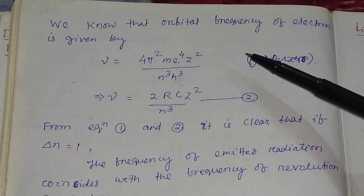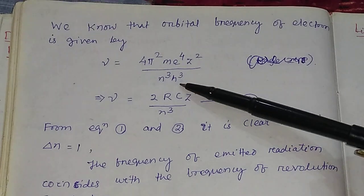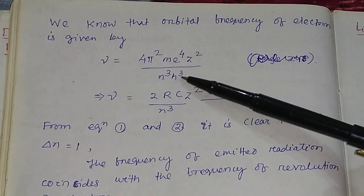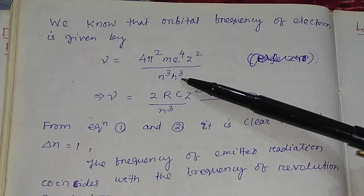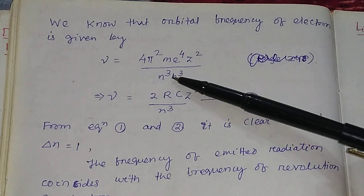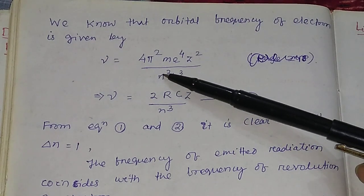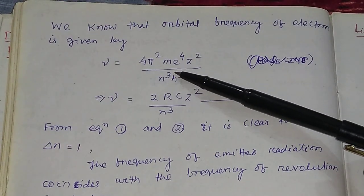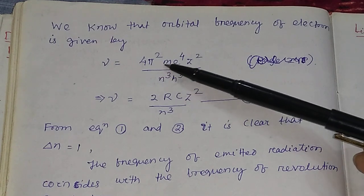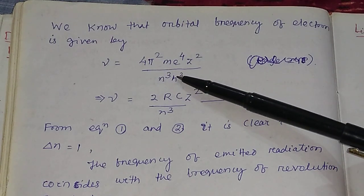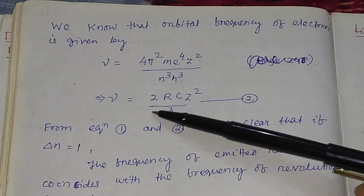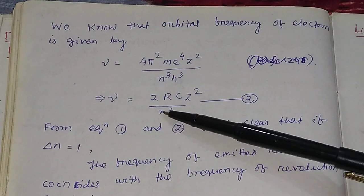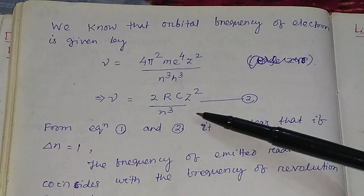The orbital frequency of the electron is given by ν = 4π²Me⁴Z² / (N³H³) in CGS units, where K = 1. In terms of the Rydberg constant, this can be written as ν = 2RcZ² / N³. This is Equation 2.